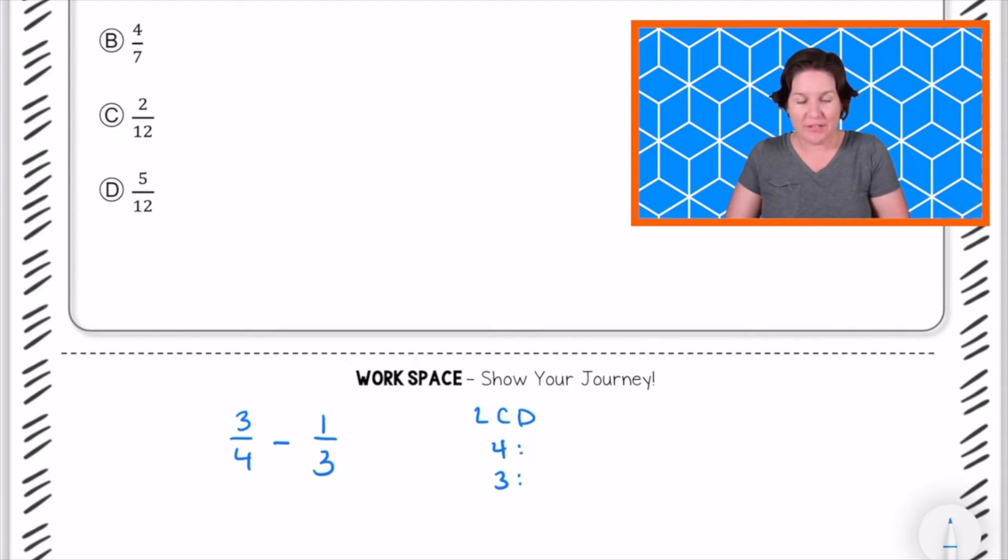So if I count by 4s, that would be 4, 8, 12, 16, 20. Let me stop there and see if I get a match. Moving on to the 3s would be 3, 6, 9, 12. I've got a match. The least common denominator, the lowest common denominator that they have in common, the denominator they have in common, would be 12.